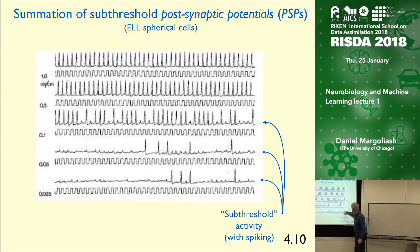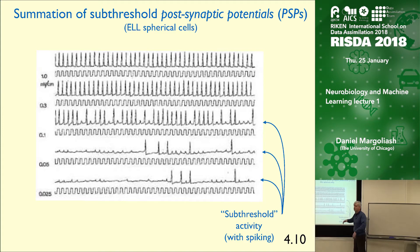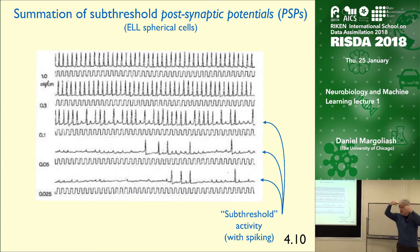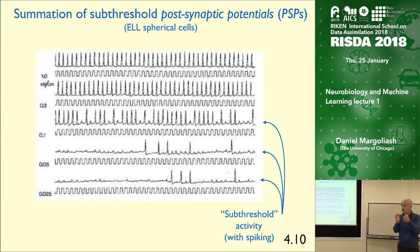This is a trace from a T-receptor, and this is from the first stage of processing in the brain—spherical cells—the first stage of processing in the central nervous system. Here's a recording. Unlike the previous recordings where the electrode is close by and extracellular to the cell, in this recording a very fine glass micropipette was drawn so it could actually pierce inside of the cell, while the cell remains still reasonably healthy.